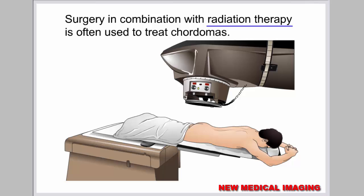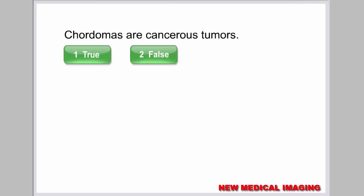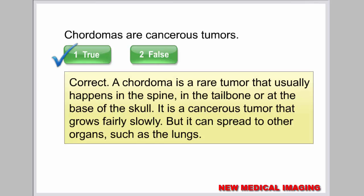Surgery in combination with radiation therapy is often used to treat chordomas. A chordoma is a rare cancerous tumor that usually happens in the spine, in the tailbone, or at the base of the skull. It grows fairly slowly but can spread to other organs such as the lungs.